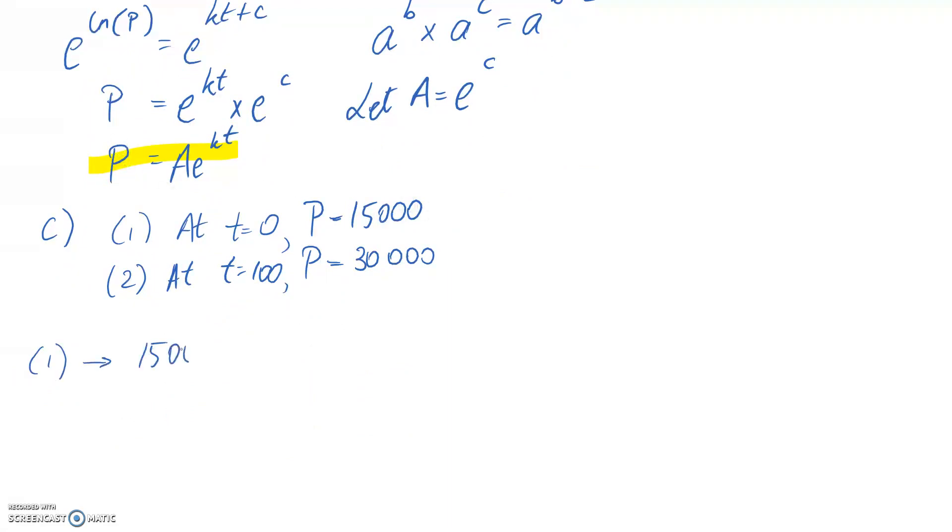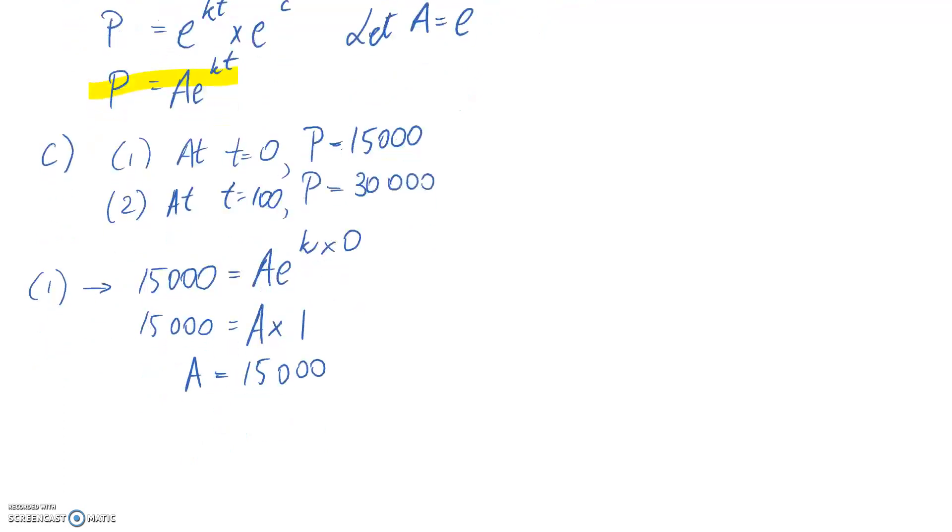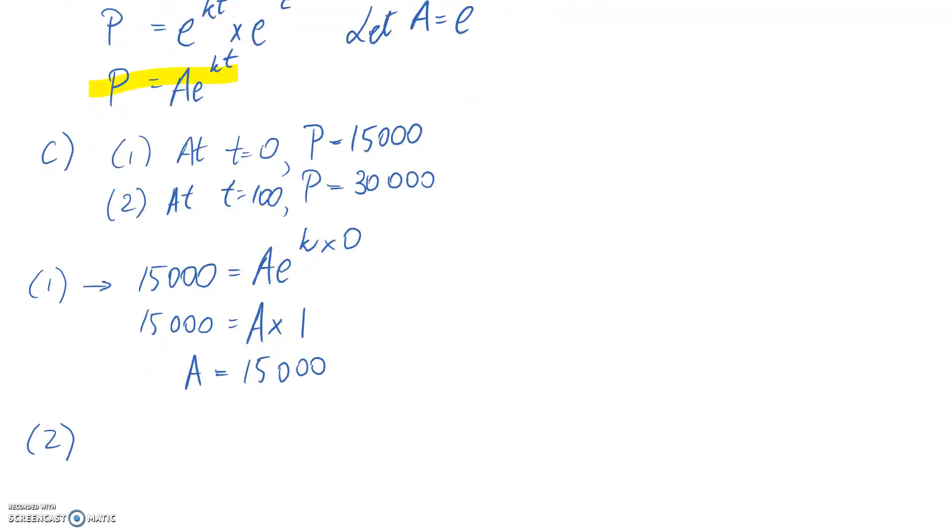Substituting the first condition: P = 15,000, t = 0. This gives 15,000 = a·e^(k·0). Since e^0 = 1, we get a = 15,000.